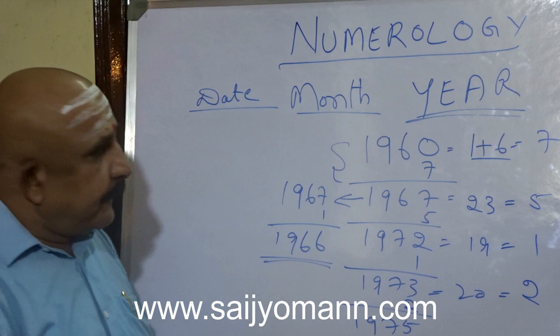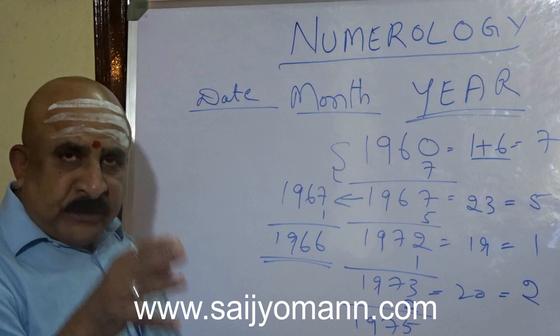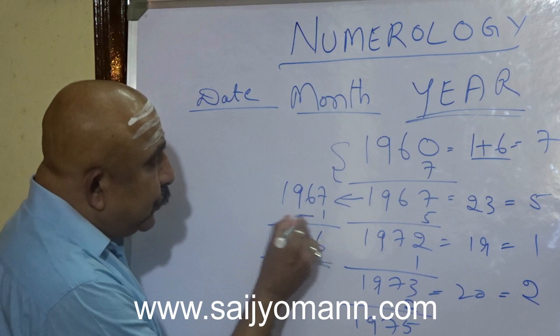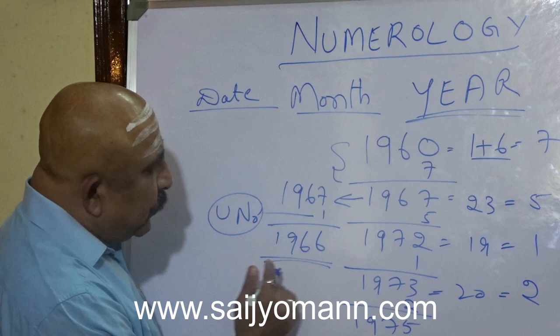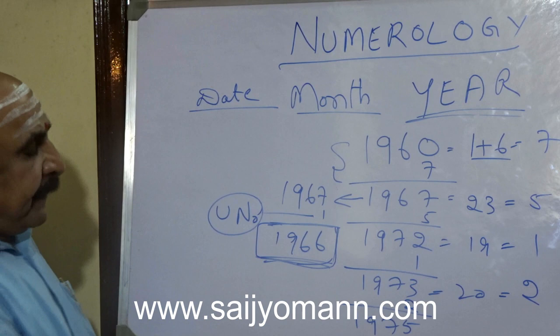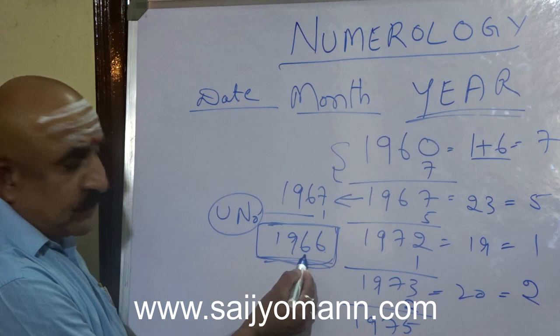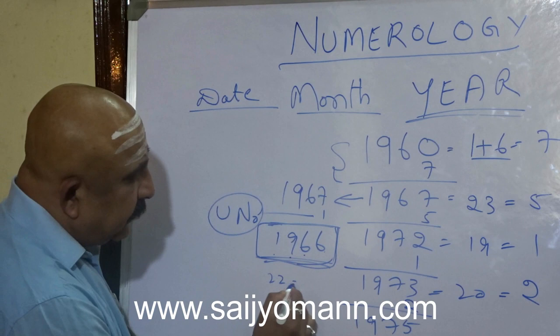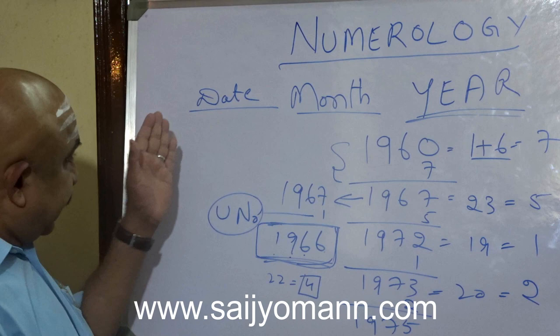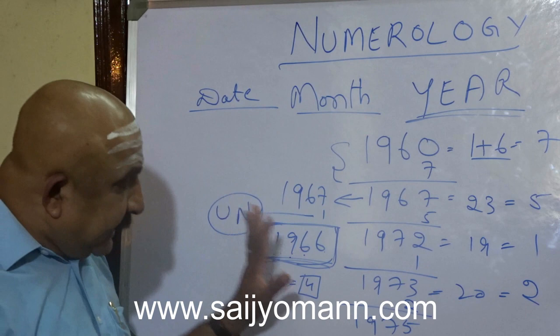So: 1960 is the year of birth. The total brings you to 1967. To see drastic changes happening beforehand, remove the one — the universal century number — and you get 1966. Something is going to happen in 1966 for the person born in 1960. Let us add and see: 1 plus 9 plus 6 plus 6 equals 22, and 2 plus 2 equals 4. The answer for 1966 is 4.